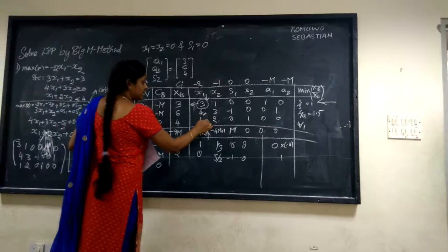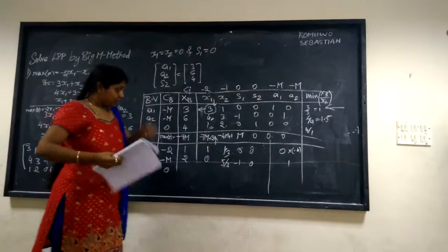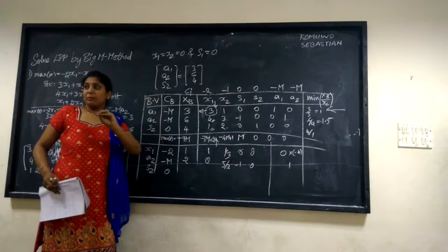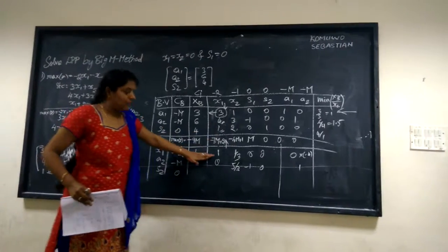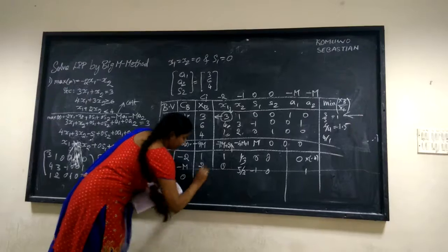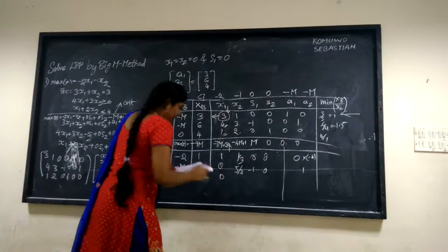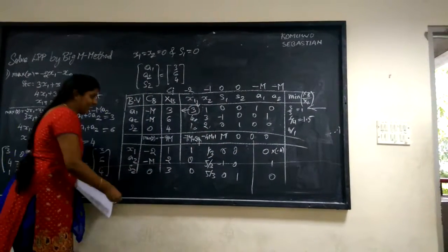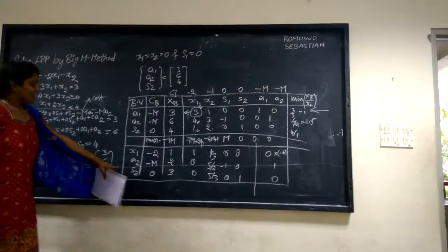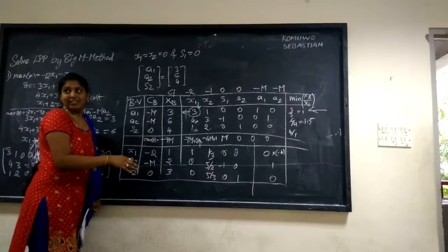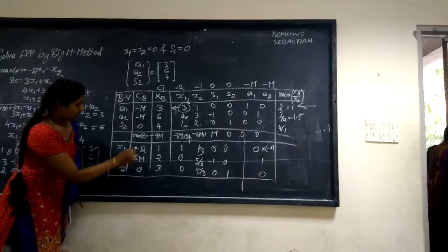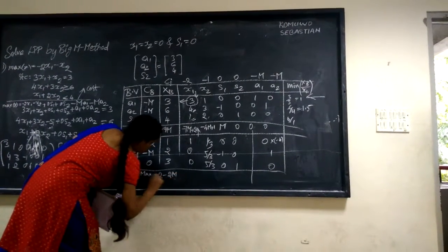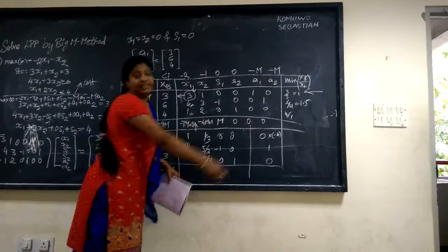To make the x1 element in row 3 zero, subtract row 1 from row 3: 4−1=3 (wait, 1−1=0 for x1 column), giving row 3: 0, 5/3, 0, 1, 0, 0. We then recalculate max Z for the new table. Max Z = −2 × (value) giving approximately −2 − 2M. Again we calculate the new delta j values.